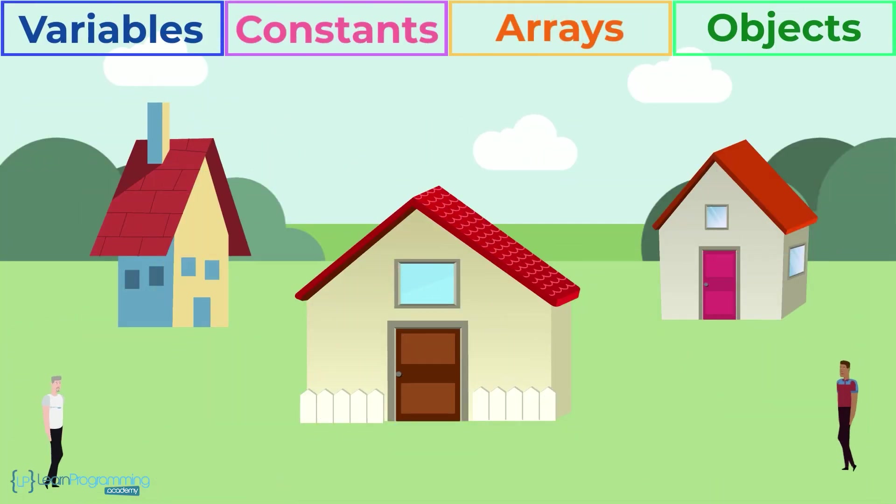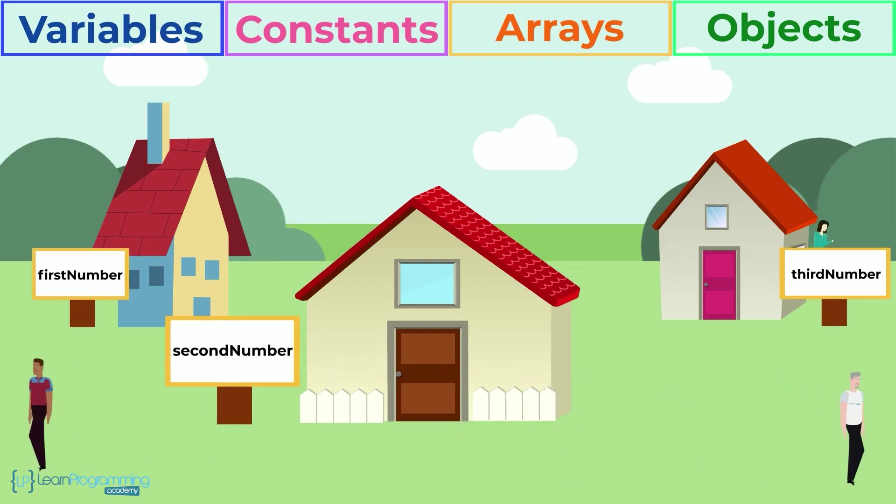One final thought which might help further clarify this is to equate a variable constant array or object symbolic name as the address or location in memory like a home or apartment address and each address can store data in that memory location much like people live in a specific home or apartment. A bit of a stretch but sometimes it helps to try to visualize such concepts with real world examples.